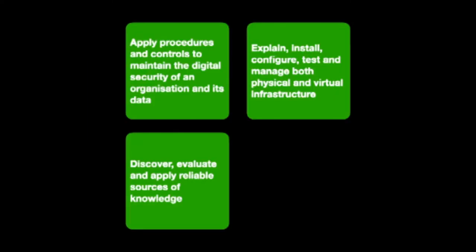The occupational specialism is where things change slightly. With the infrastructure route, the occupational specialism has three areas: apply procedures and controls to maintain the digital security of an organisation and its data; explain, install and configure, test and manage both physical and virtual infrastructure; and finally, discover, evaluate and apply reliable sources of knowledge.